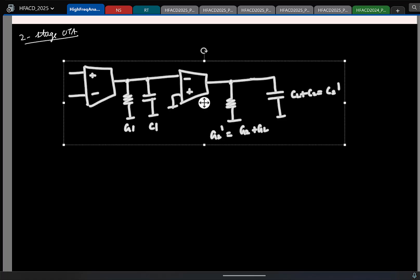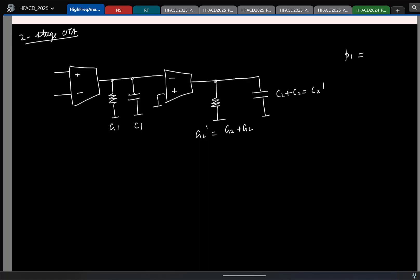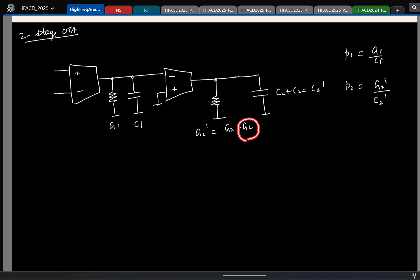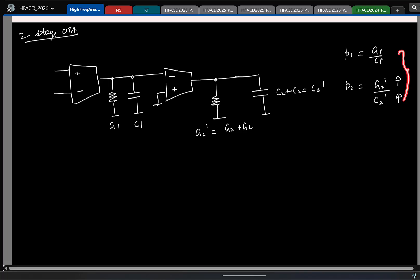So now tell me what are the pole locations here? G1 by C1 and G2 prime by C2 prime. So here one point to notice, C2 prime indeed consists of the load capacitor. So this guy will be larger compared to C1 for sure. But also notice that at the output I am trying to drive a small resistive load. So RL is small. So GL is going to be larger. So G2 prime will be greater than G1. So if I look at the second pole, C2 prime is higher, G2 prime is also higher.